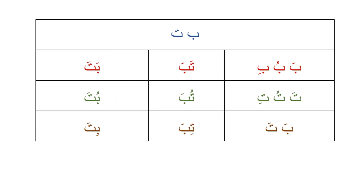Let's read all the little letters we've learned till now — little Ba (ب) and little Ta (ت). بَ — Ba, بُ — Bu, بِ — Bi. تَ — Ta, تُ — Tu, تِ — Ti. Ba, Ta, Ta, Ba.